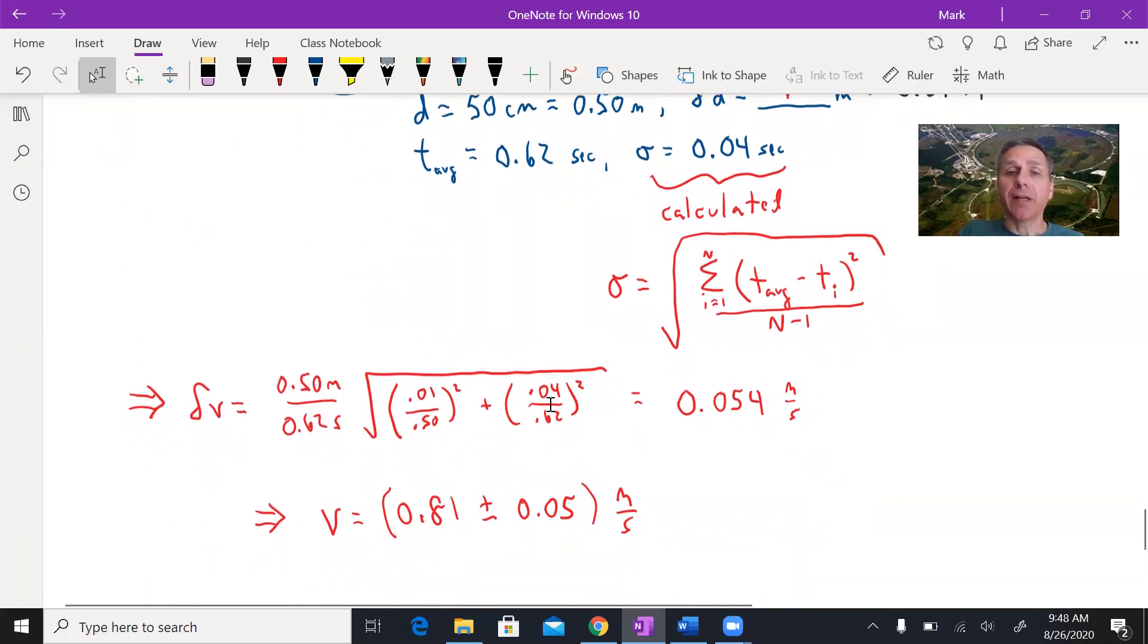And here's what's inside that square root. Here's the quadrature part. Here's that reasonable estimate of distance uncertainty. One centimeter divided by the 50 centimeter distance. We're going to square that. Here's the standard deviation of time over the average time. The average time's fractional uncertainty. We square that. Plug it all into your calculator and out comes 0.054 meters per second.